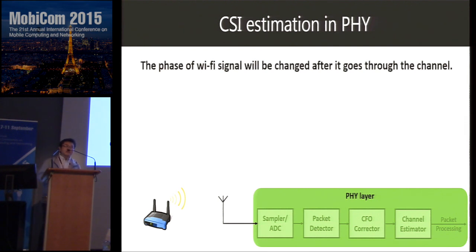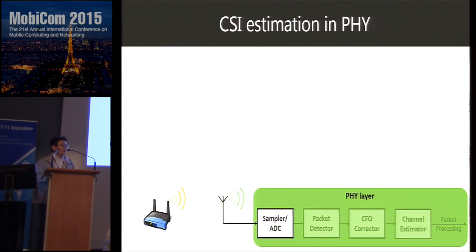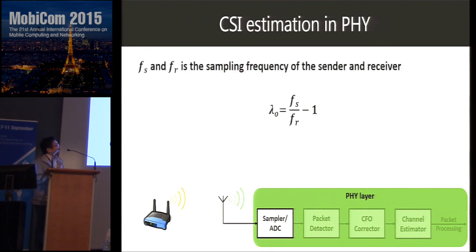To know how to remove phase errors, we need to understand how they are introduced. When a wireless signal is transmitted, the wireless channel changes the phase of the received signal — this phase difference is the CSI phase value. However, before comparison, the signal must be decoded: it is sampled by an ADC at the receiver. The sampling frequency of the ADC at the receiver and the DAC at the sender cannot be exactly the same, and this sampling frequency offset changes the phase of the received signal, denoted as lambda_O.